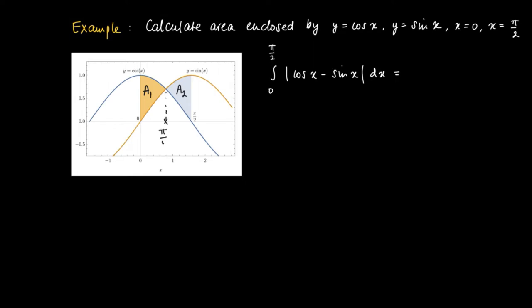But we know the point of intersection, right? So, we know that at pi over 4, we have the intersection. So, on the left-hand side, we see that the cosine is the larger of the 2, the cosine of x and the sine of x. So, we integrate from 0 to pi over 4 over the cosine of x minus the sine of x.